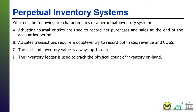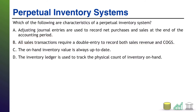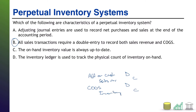B: all sales transactions require a double entry to record both sales revenue and cost of goods sold. That is a characteristic of a perpetual inventory system. You will have, depending on how you got paid, either AR or cash as a debit reflecting a sales price, and you will record sales revenue for that amount. And then you will have a debit to cost of goods sold and a credit to inventory for the cost of the good that you are now handing over to the customer. So, double entry system.